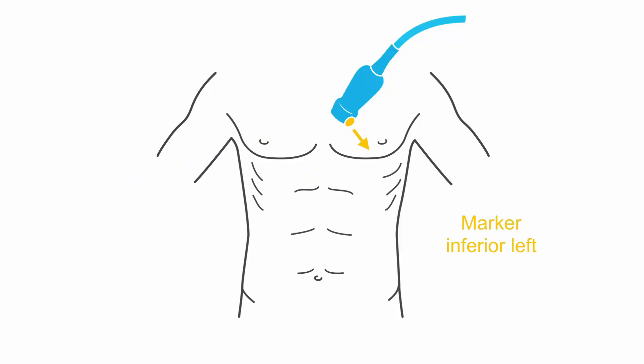Let's begin to review how to acquire the four basic ECHO views of Point of Care Ultrasound. The first view we're going to talk about is your parasternal long axis view. Using your phased array probe with your indicator to your patient's left hip, place the probe between the third and fourth intercostal space, just left lateral to the sternum.